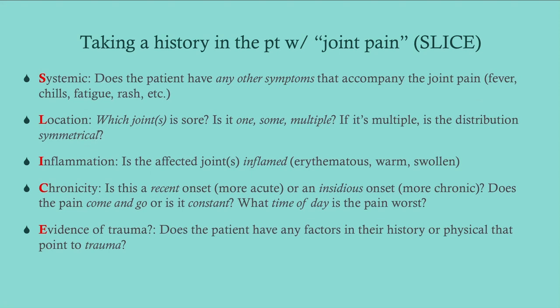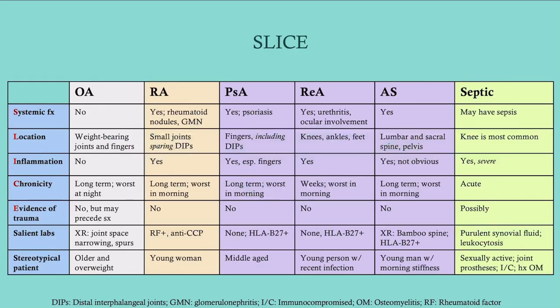L is for Location — which joint is sore? Is it one joint? Is it multiple? Is it symmetric? I is for Inflammation — is it an inflamed joint? Is it red on the outside? Is it fluctuant? C is for Chronicity — is this a recent onset, or has this been going on for years? E is for Evidence of trauma — fairly straightforward. You can take this and make a table covering osteoarthritis, RA, psoriatic arthritis, reactive arthritis, ankylosing spondylitis, and septic arthritis. Understanding how each of these present will go a long way in helping you with your differential.